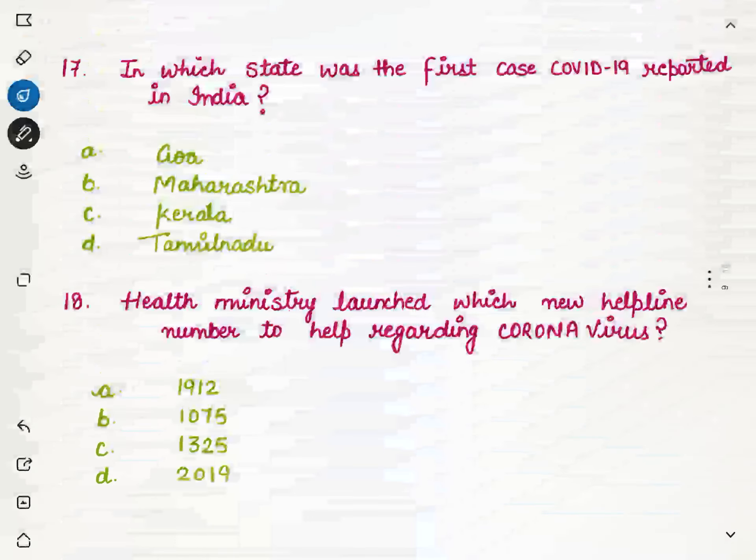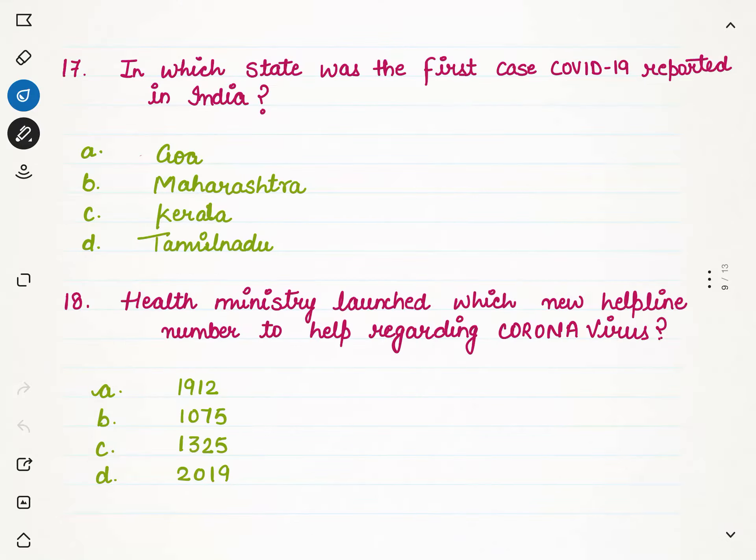In which state was the first case of COVID-19 reported in India? It was Kerala, because a Kerala girl who was a student studying in China came to India at the same time when corona was spreading. She was in Wuhan, which was the epicenter of this disease, and after coming here, COVID-19 first spread in Kerala because of her.